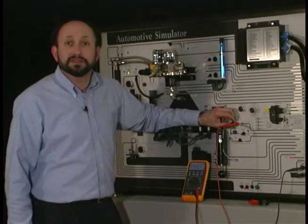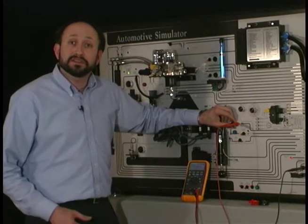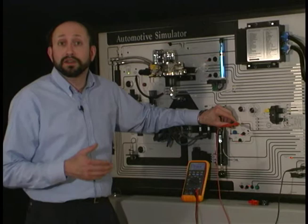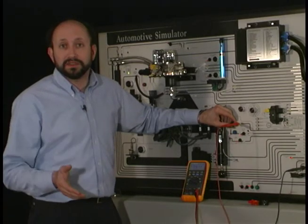We're monitoring a vehicle speed sensor. Now this is a Hall effect sensor and what you're going to find is that the voltage values and the duty cycle won't vary a great deal. But what will vary is the frequency of the signal.